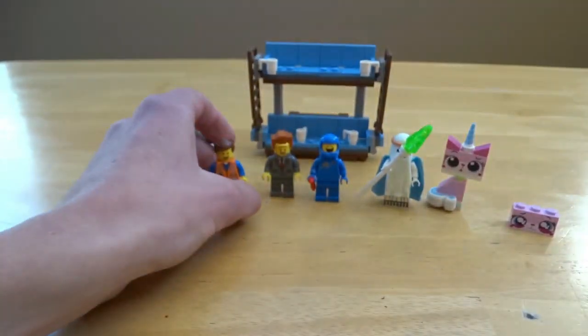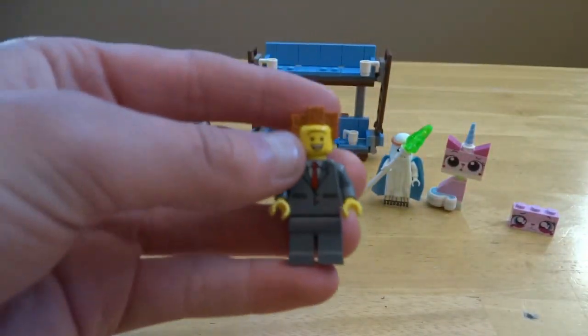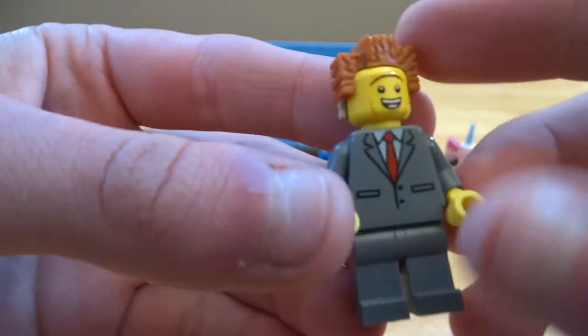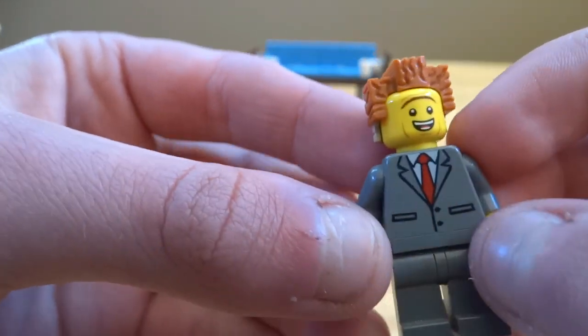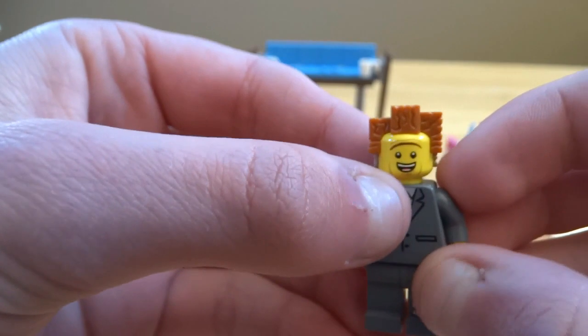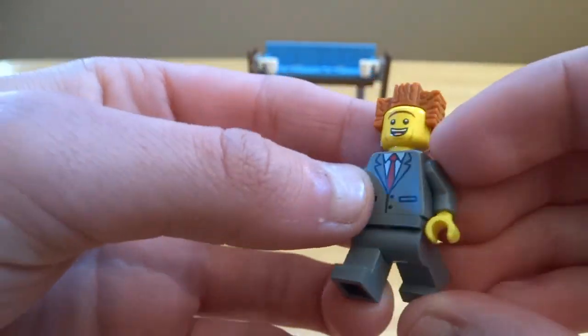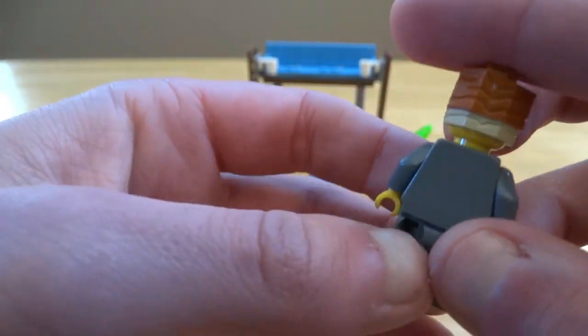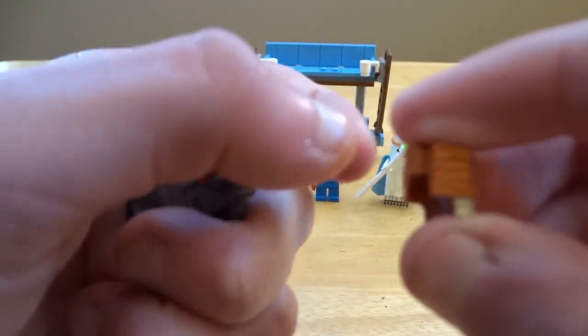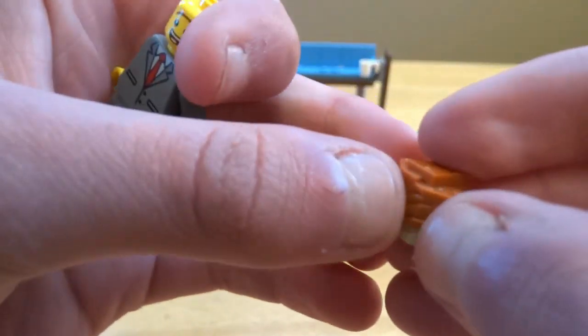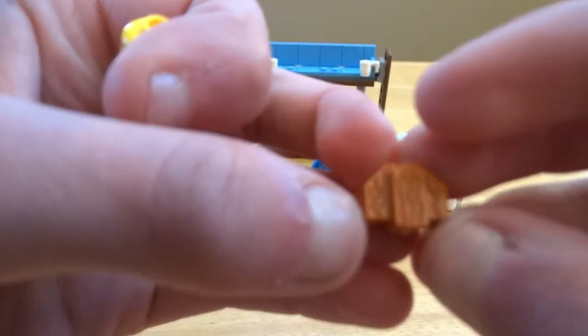Next up is Lord Business. He has a standard red tie, standard business suit, gray legs with no print on it, no print on the back. His hair piece, which I do believe is exclusive to him, has five different sides with the weird mohawk I guess on the top.